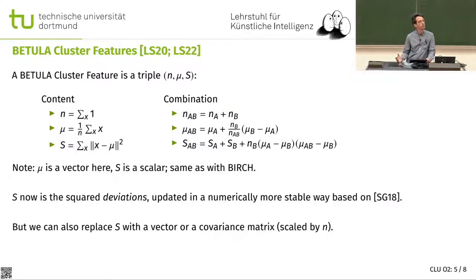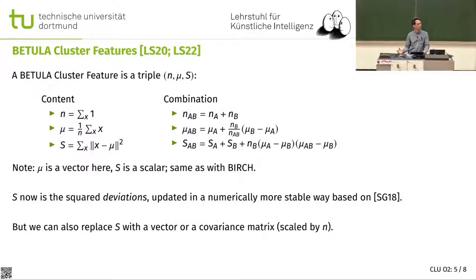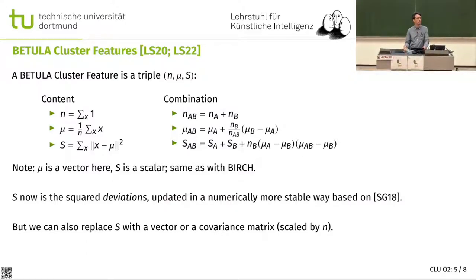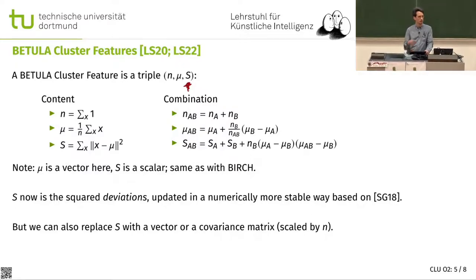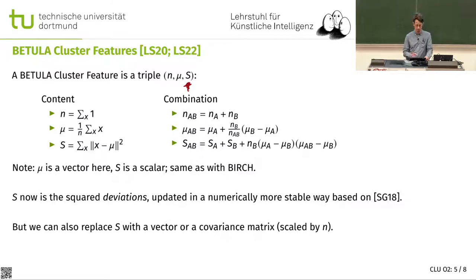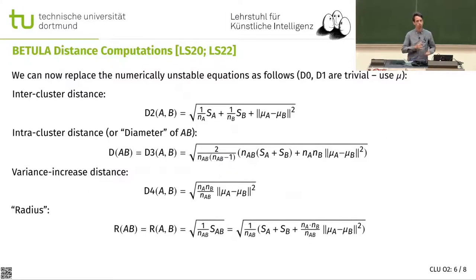This seems like a very minor change — the idea of using the mean instead of the linear sum. Probably some implementations already did this. The interesting part is really not storing the sum of squares but storing the squared deviation from the center instead. That means we need to change all the equations, which was some work, but it turns out that many of them are not more difficult. Euclidean and Manhattan distances just use the center, so they're as easy as it can get.